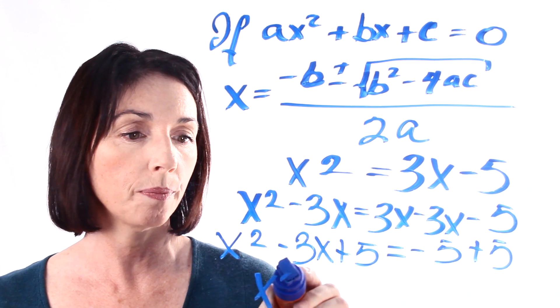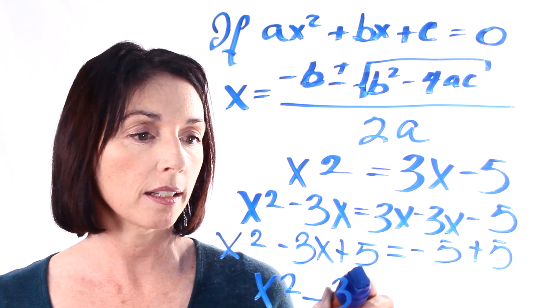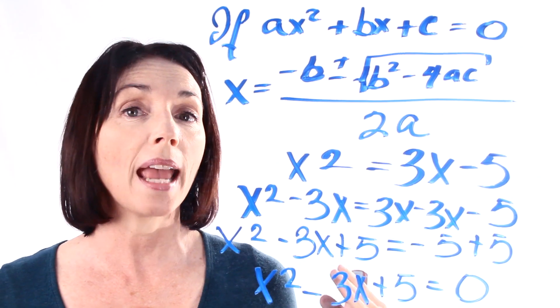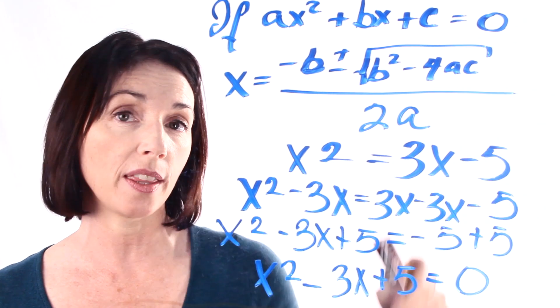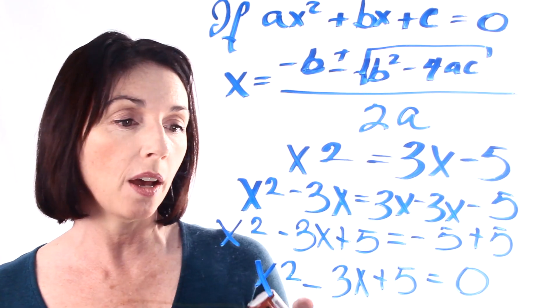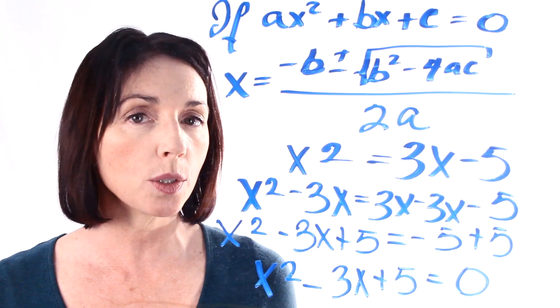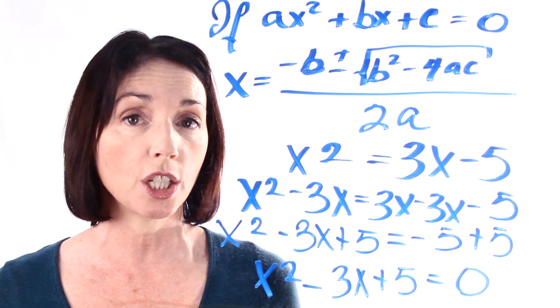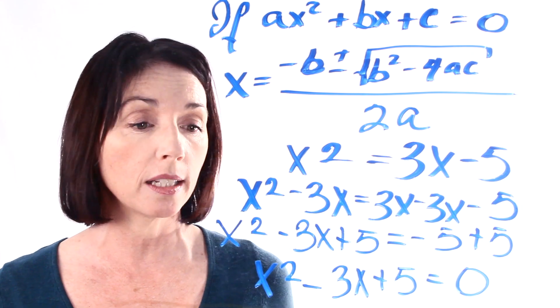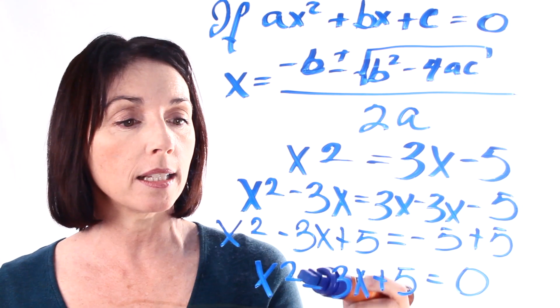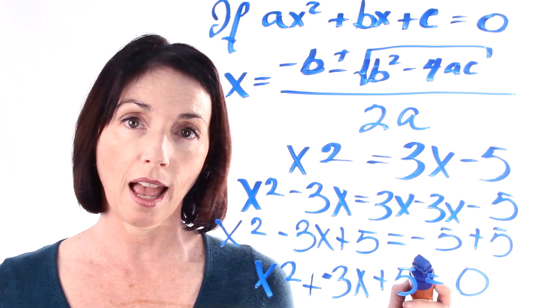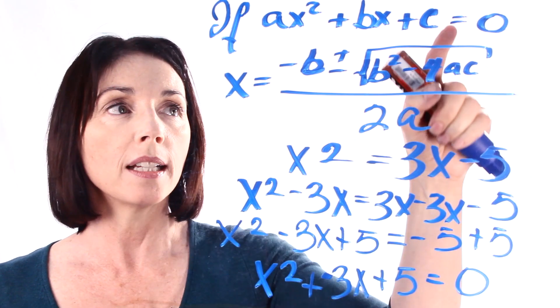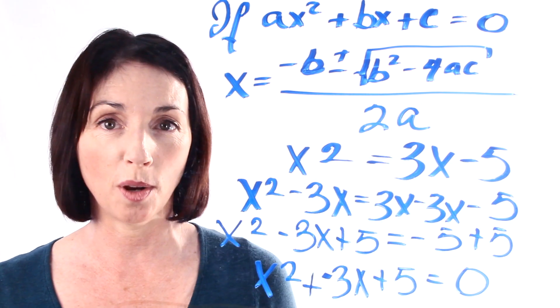So we end up with x squared minus 3x plus 5 equals zero. Now we have the right form to satisfy the condition. Now I know we have a minus sign here and a plus sign here but that's really okay because we can always change subtraction into addition by just changing the sign of whatever we're subtracting. So minus 3x is the same as plus negative 3x. So our equation is actually in the perfect form to satisfy the condition and we can use the quadratic formula.